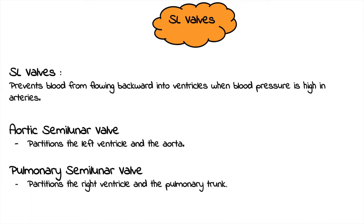The semilunar valves are going to prevent blood from flowing backward into the ventricles when blood pressure in the arteries is high. You have your aortic semilunar valve, which partitions between the left ventricle and the aorta. And you have your pulmonary semilunar valve, which partitions between the right ventricle and the pulmonary trunk.